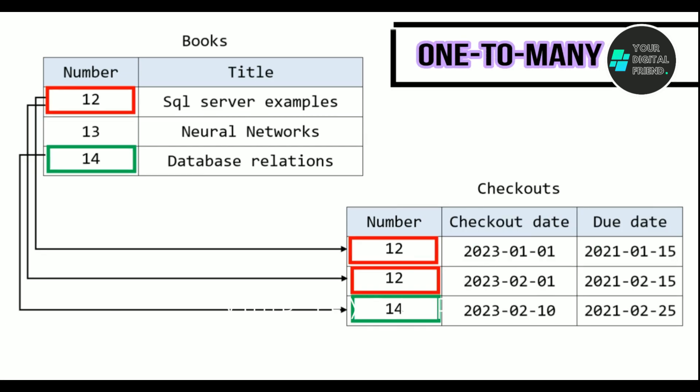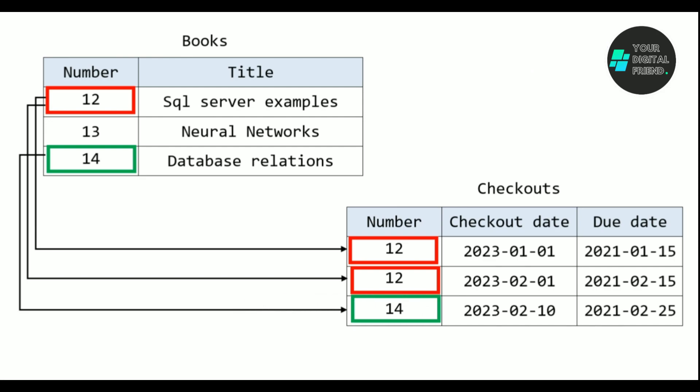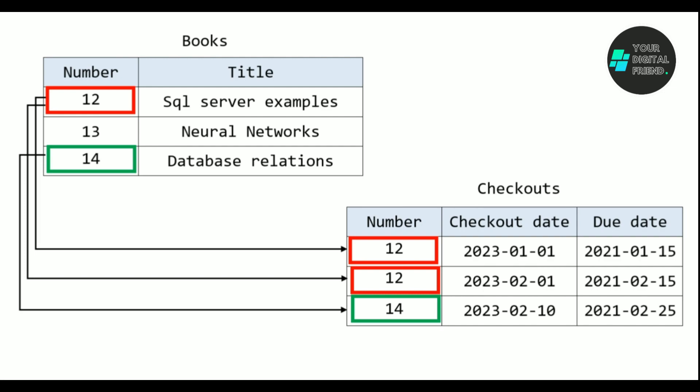One-to-many relationship. A one-to-many relationship exists when one record in one table corresponds to many records in another table. For example, consider the same library database. You have two tables: books and checkouts. The books table might contain columns for the book's number and title.